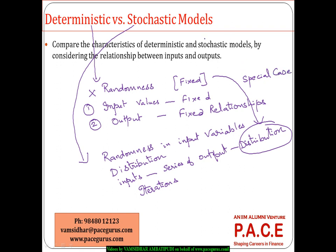A single value from a deterministic model can be looked at as a special case of a stochastic model — deterministic is only with one set of values. We can even use the deterministic model to test the stochastic model, because in the stochastic model we have assumed a distribution and generated a formula for the output. To test it, take one value — preferably the average or median — for the input variable and see how the output behaves. Check whether it is in line with actuals or far from actual behavior.